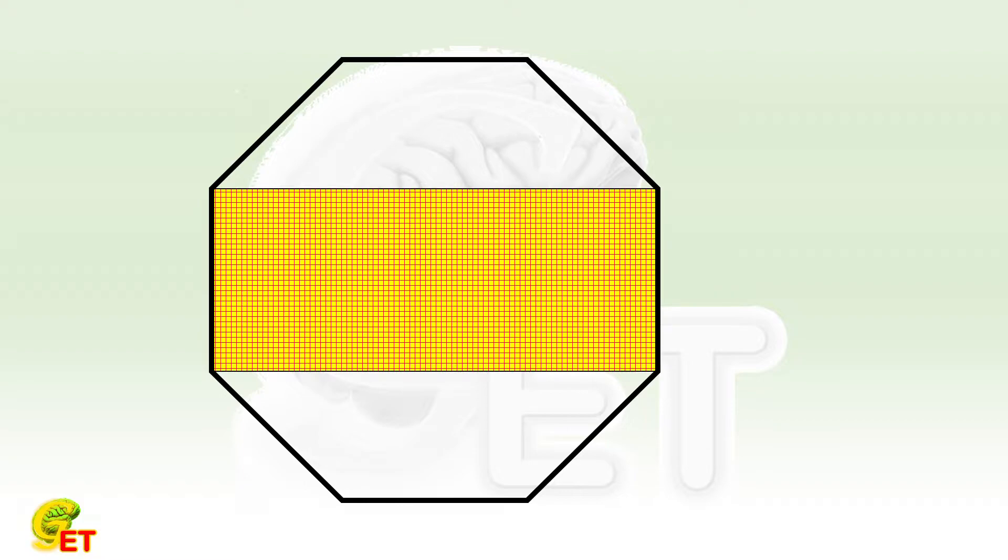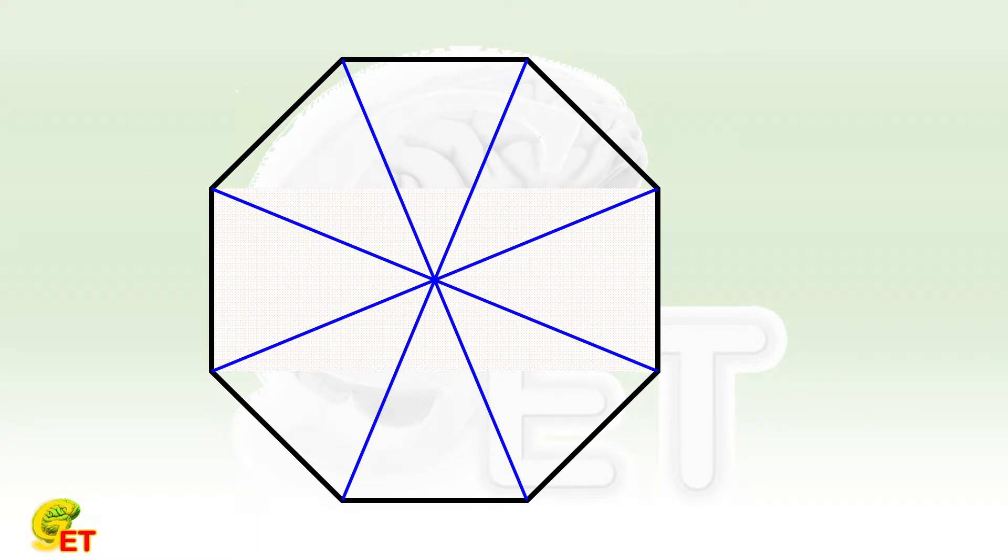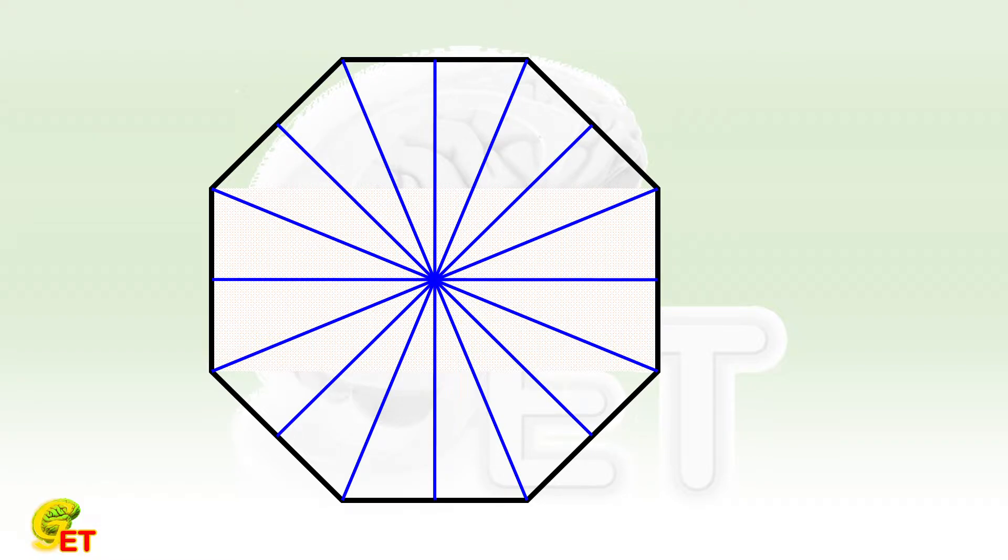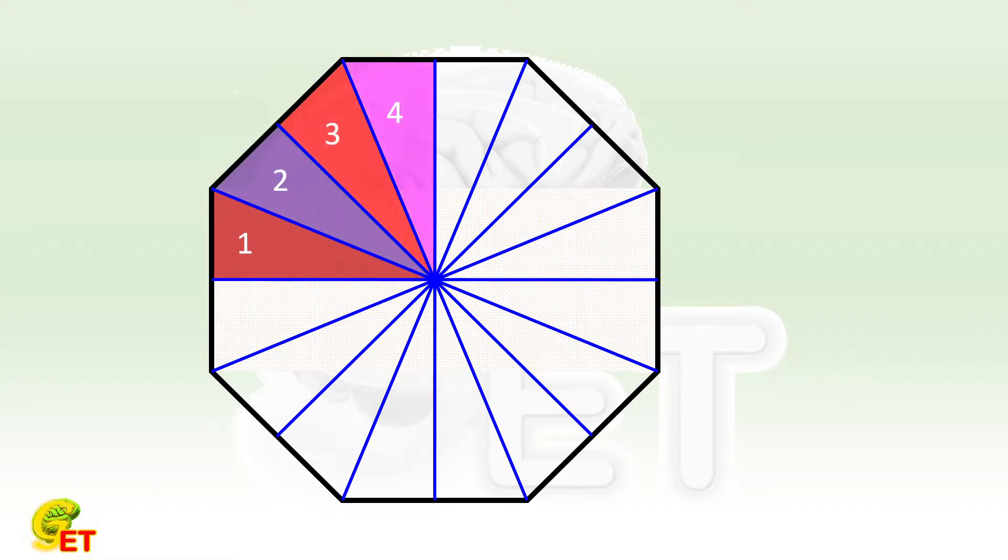We first plot the diagonals which connect every pair of opposite vertices. And then, plot the straight lines which connect the midpoints of every pair of opposite sides. Now, the octagon is divided into 16 congruent triangles.